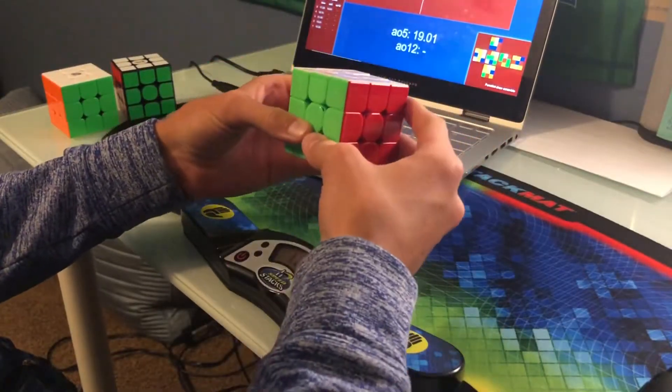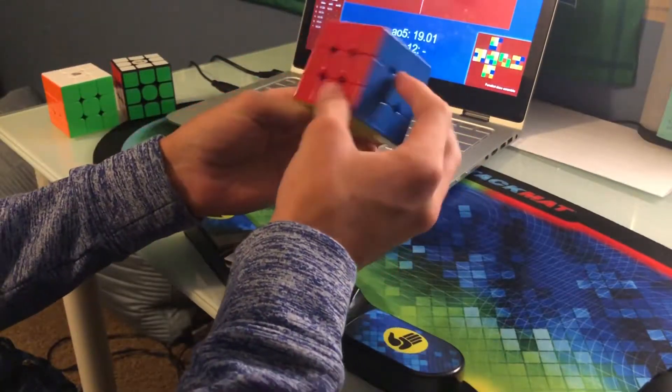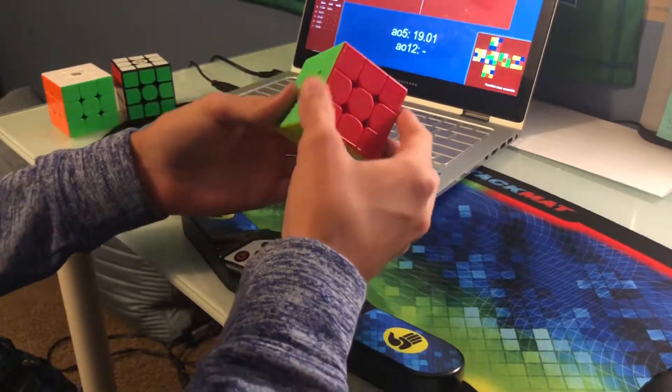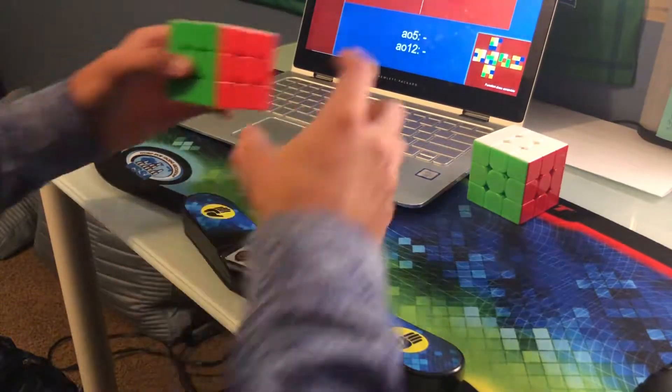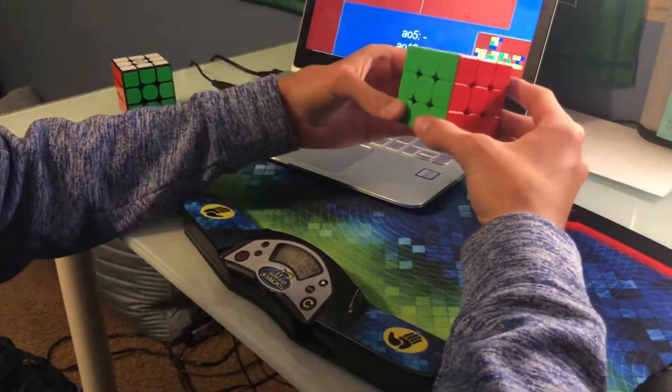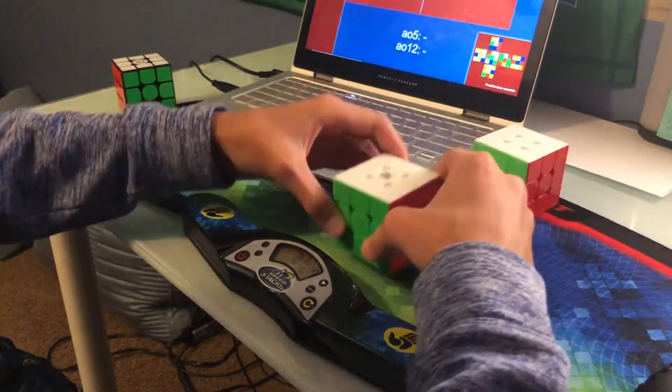So our official average for the Weilong GTS-3M, which is our $40-ish speed cube, is 19.01 seconds. Now we will move on to the YJ Yulong V2-M, which is roughly $12, I believe.